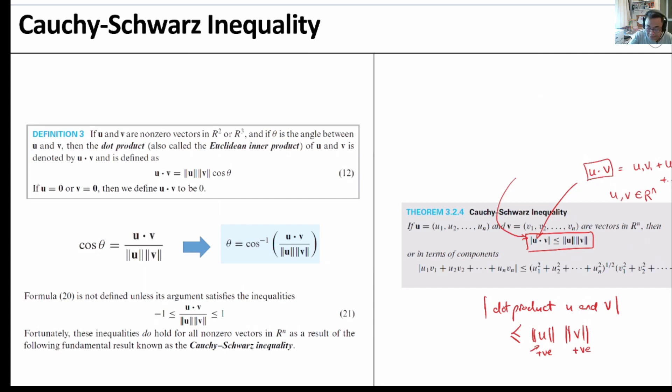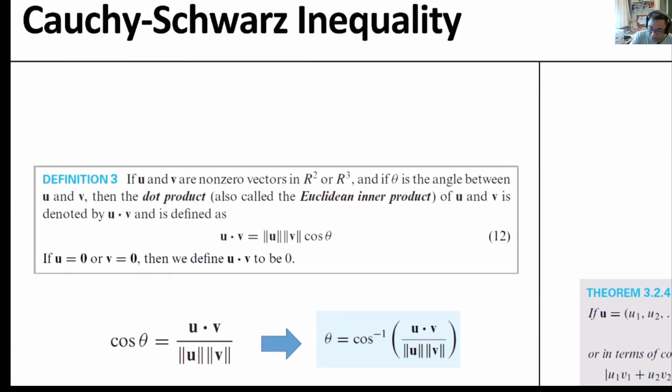Let us come back to the first slide where we define u dot v, the dot product of u and v, to be the norm of u multiplied by norm of v multiplied by cosine theta, where theta is the angle between the two vectors.